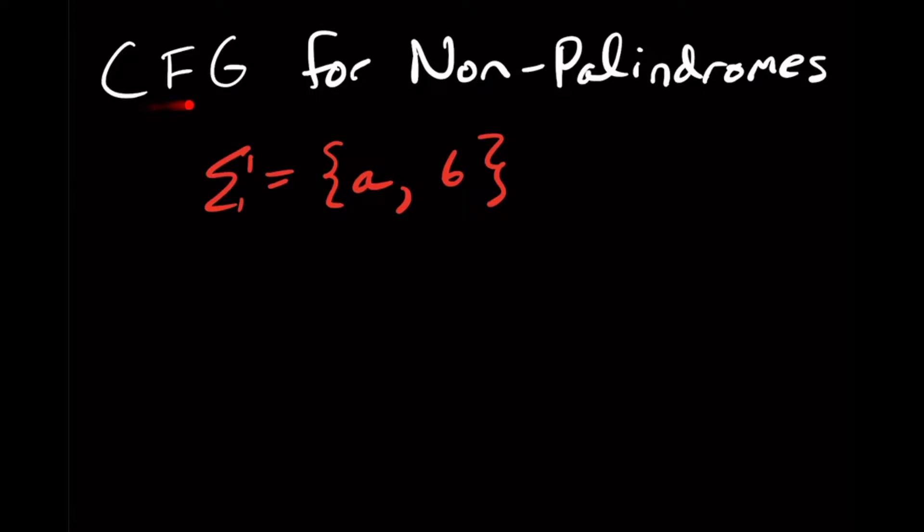Hi, so I want to create a context-free grammar for all strings that are not palindromes. Remember that a palindrome is a string W which is equal to its reverse. For example, ABBA is equal to its reverse. If you read it forwards and backwards, it's exactly the same string.